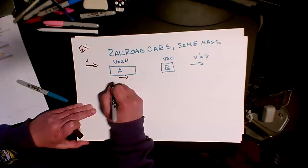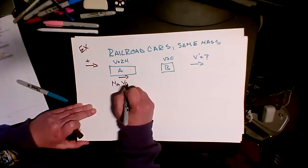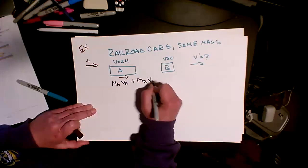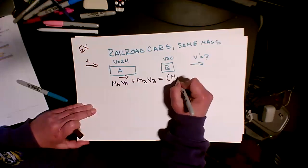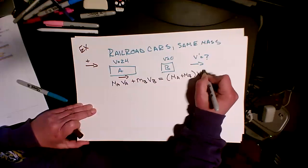So I have mass A times VA plus mass B times VB equals—now they're sticking at the end—so mass A plus mass B times V prime.